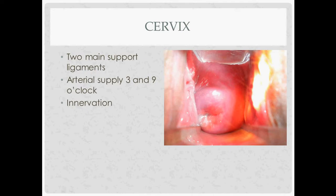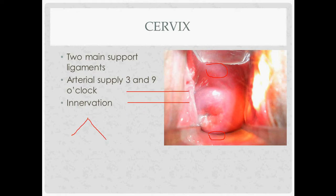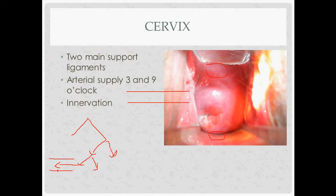The fornices include the anterior fornix by the vesico-uterine pouch and the posterior fornix by the recto-uterine pouch. The main ligaments supporting the cervix: the cardinal ligament comes in from the side providing lateral support. The uterine artery travels in the cardinal ligament as a branch of the anterior division of the internal iliac artery, with branches to the cervix and vagina. The cervical branches tend to travel at the 3 o'clock and 9 o'clock positions — places on the cervix you'd want to avoid when manipulating it.